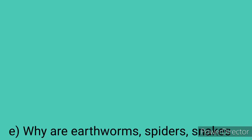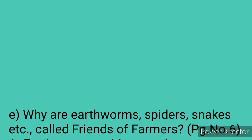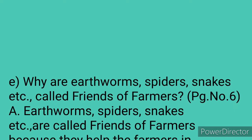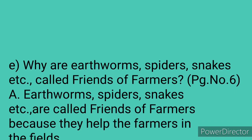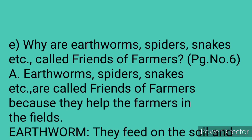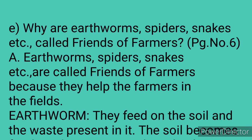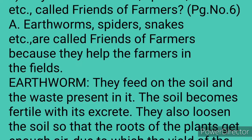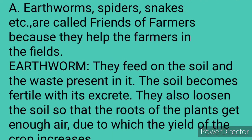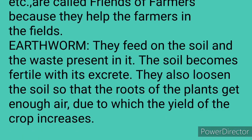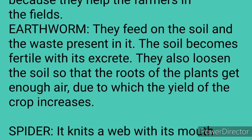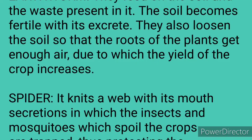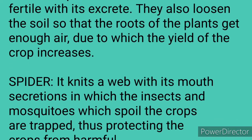Next question: Why are earthworms, spiders, snakes, etc. called friends of farmers? Reference page number 6 in your textbook. Earthworms, spiders, snakes etc. are called friends of farmers because they help the farmers in the fields. Earthworms feed on the soil and waste present in it; the soil becomes fertile with their extract and they loosen the soil so that roots get enough air, increasing crop yield. Spiders knit a web with their mouth secretions in which insects and mosquitoes that spoil the crops are trapped, protecting crops from harmful insects.